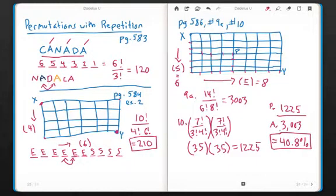So again, I hope this sort of clarifies how to go about using the principle permutations with repetition and applying it to a trickier question like number 10 from page 586. Thanks for watching, and I'll see you in the future.